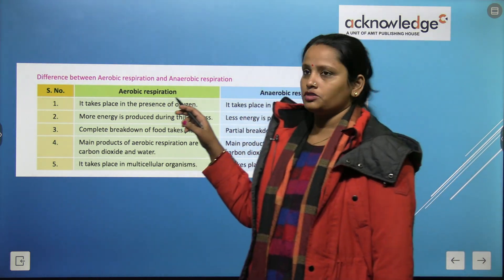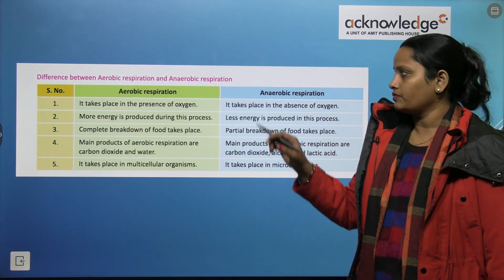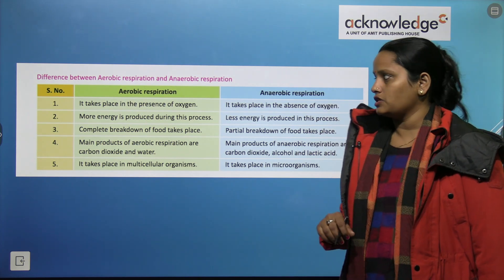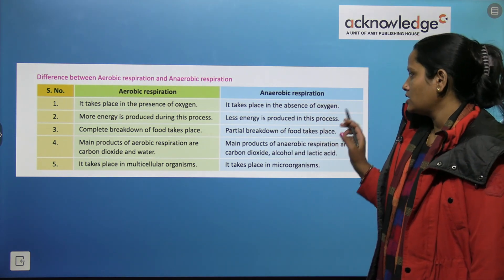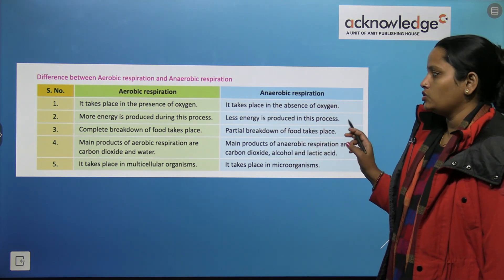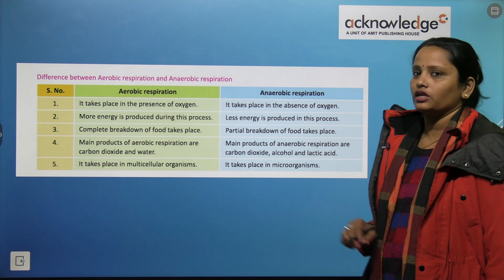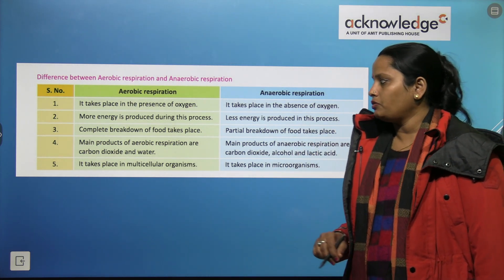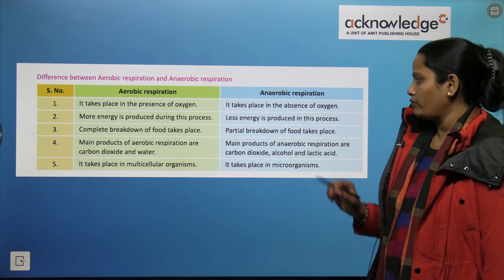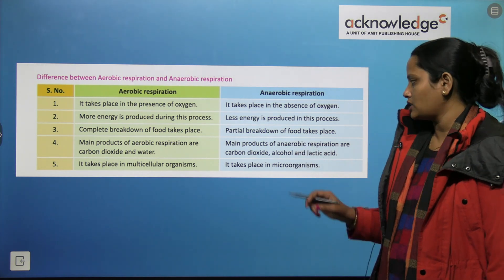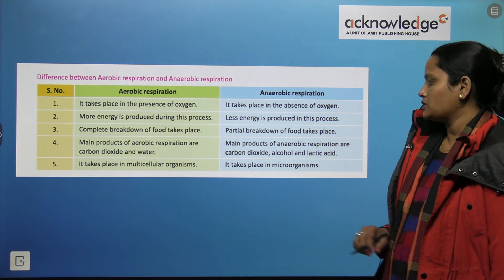The difference between aerobic and anaerobic respiration: aerobic respiration takes place in the presence of oxygen and produces more energy, with complete breakdown of food, and the main products are carbon dioxide and water. Anaerobic respiration does not require oxygen, produces less energy, with partial breakdown of food, and the main products are carbon dioxide, alcohol, and lactic acid. Aerobic respiration takes place in multicellular organisms, while anaerobic takes place in microorganisms.